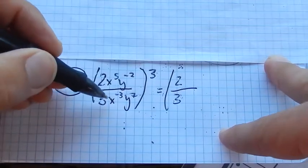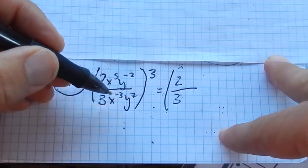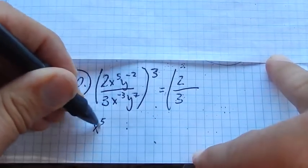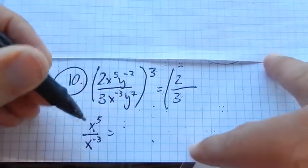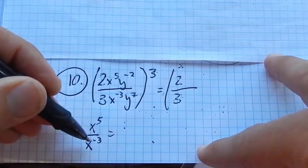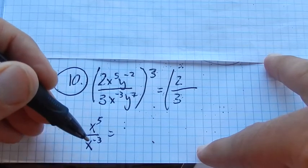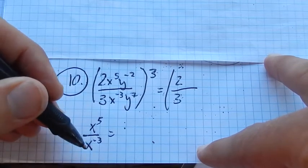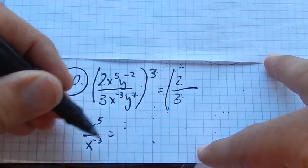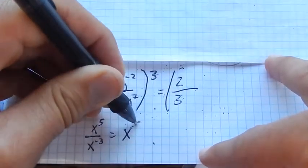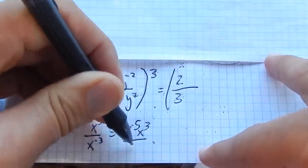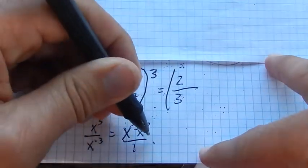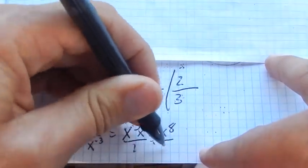x to the fifth over x to the negative three. I'm going to think of just that piece right now. What these negative exponents do is they take the reciprocal, they switch where that piece is at in the fraction. So this is the same as this, which is x to the eighth over one.